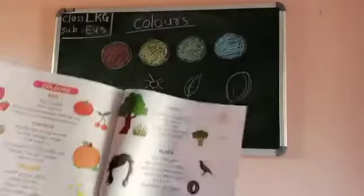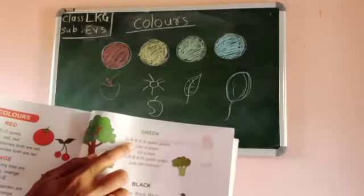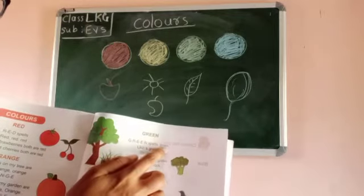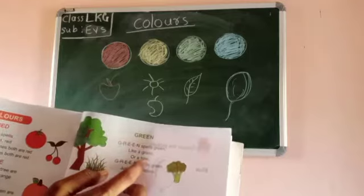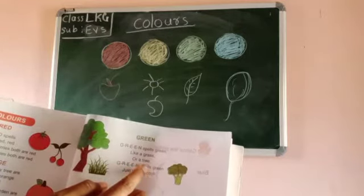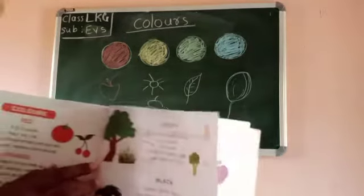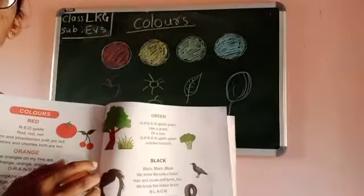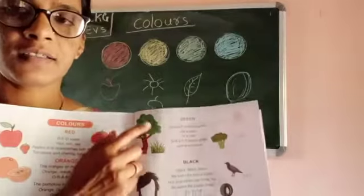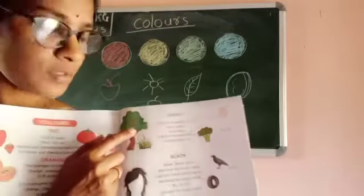Next — green. G-R-E-E-N. Green spells green like grass or a tree. G-R-E-E-N spells green just like broccoli. You see the tree — what color is it? Green color. The leaves are green.